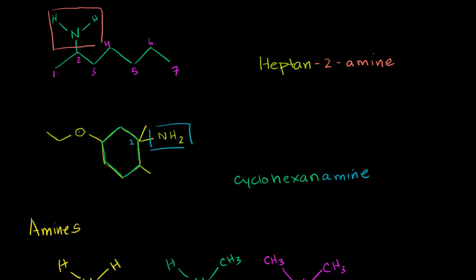Now what else do we have on this thing? We took care of the amine. Well, we have this ether right here. And this ether has one, two carbons. If it was just a two carbon chain, it would be ethane. But since it's an ether, it's bonded to this oxygen, we call this ethoxy. So that right there is ethoxy.